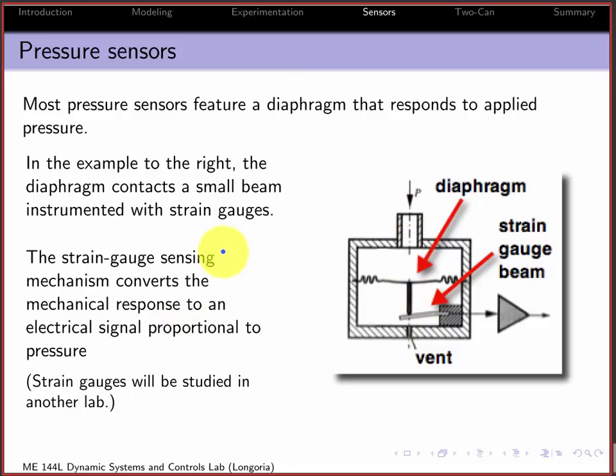We would talk about strain gauges in another lab, but by detecting the strain in those sensors you can infer a deflection on that diaphragm and that's related to pressure and that's how you can get a kind of electromechanical type pressure sensor.